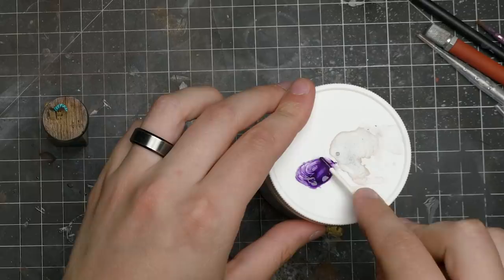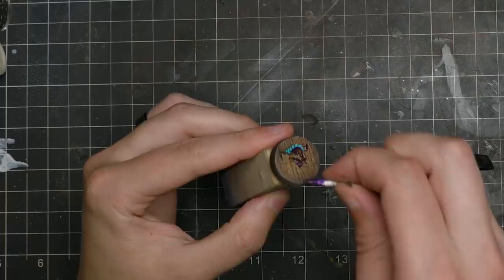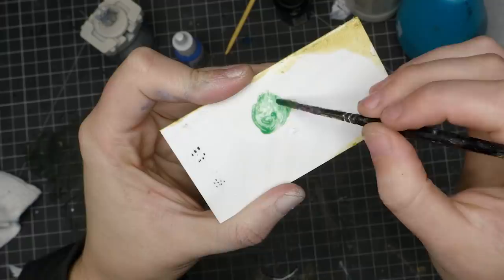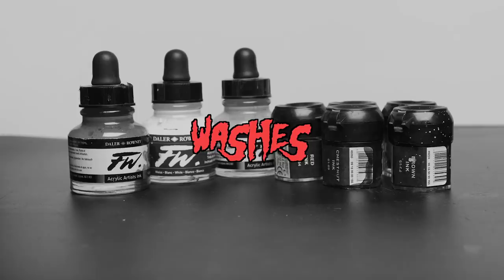Now back to the inks. Number four, you can mix inks with other hobby products and get nice color while still being translucent. Most notably you can do this with things like Uhu Glue when doing stringy gooey effects or something like Mod Podge Dimensional Magic or Vallejo Stillwater. I can create a nice simple watery effect while still maintaining my translucency.